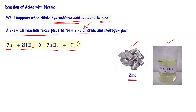HCl is in aqueous form, meaning it is mixed in water. Zinc is a solid. ZnCl₂ — zinc chloride — is also in aqueous form, meaning it is dissolved in the water. A lot of water is present, that is why we say it is aqueous.